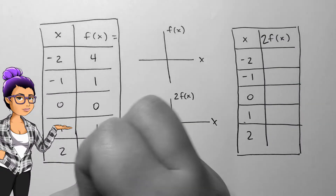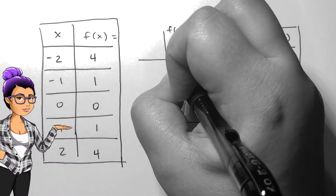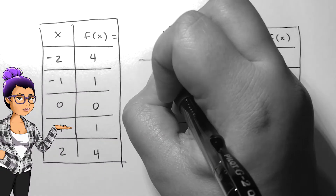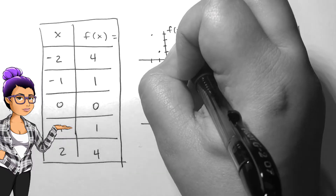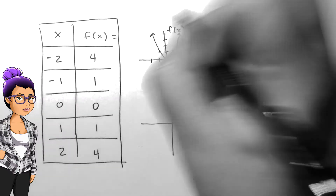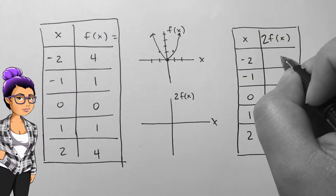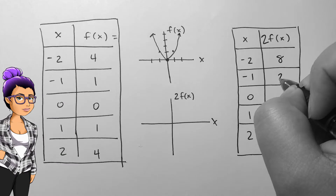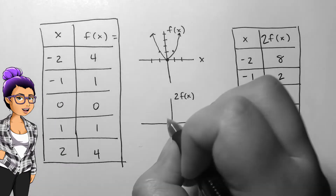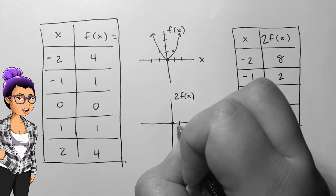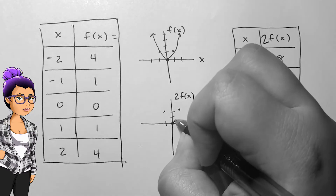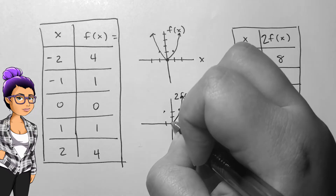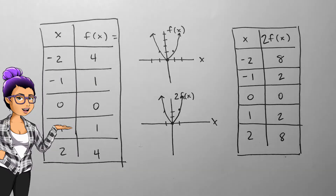Considering the function f of x equals x squared, the function 2 f of x will be a vertical stretch by 2 units. We can see this by plotting f of x into this table and graph, then plotting 2 f of x in the same way. We can see from the table that all of the outputs have been doubled from f of x to 2 f of x. The graph also follows this.